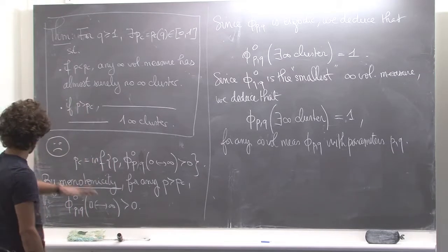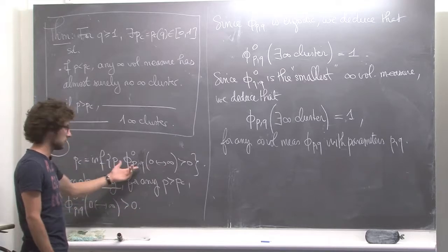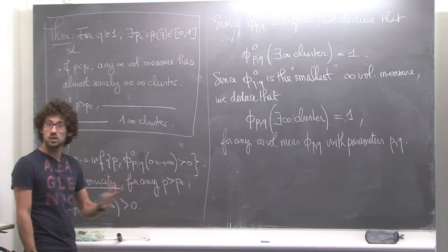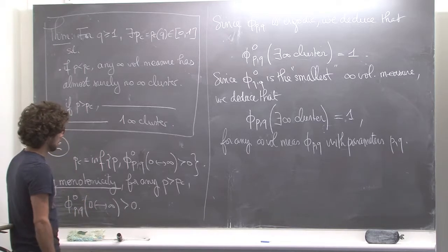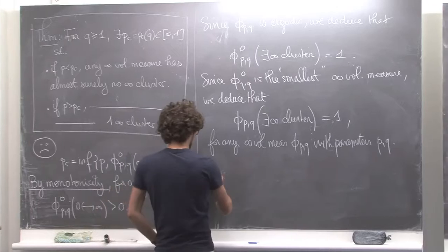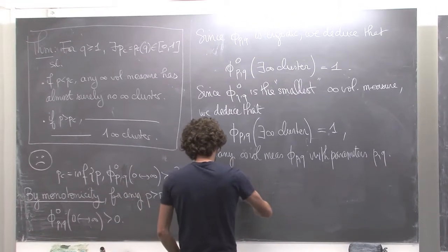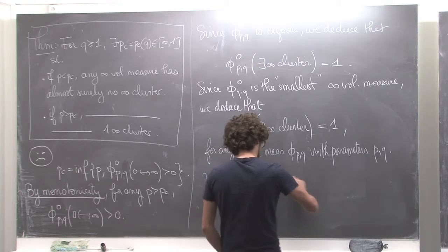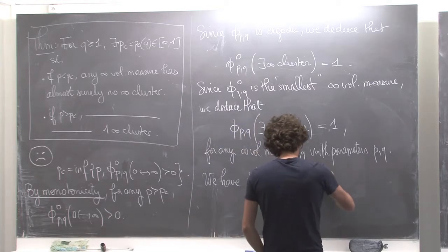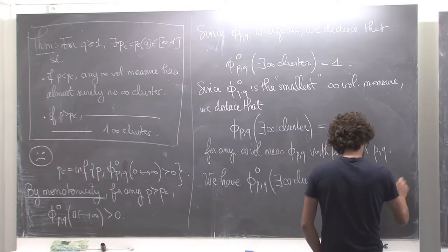For P smaller than P_c, we have that 0 is connected to infinity with probability 0 for the free boundary condition, which implies there is no infinite cluster. So we have phi^0(P,Q) of the existing infinite cluster equals 0 for any P strictly smaller than P_c.